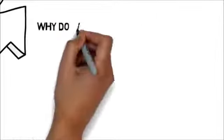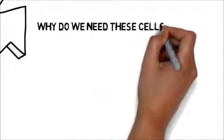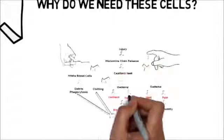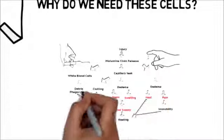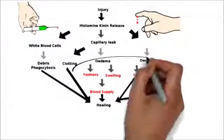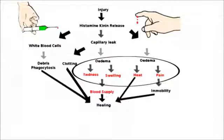But why do we need these cells? Let's take a look at the healing process. As you see here, redness, swelling, heat, and pain are part of inflammation. And inflammation and blood supply are key components in the process leading to healing.